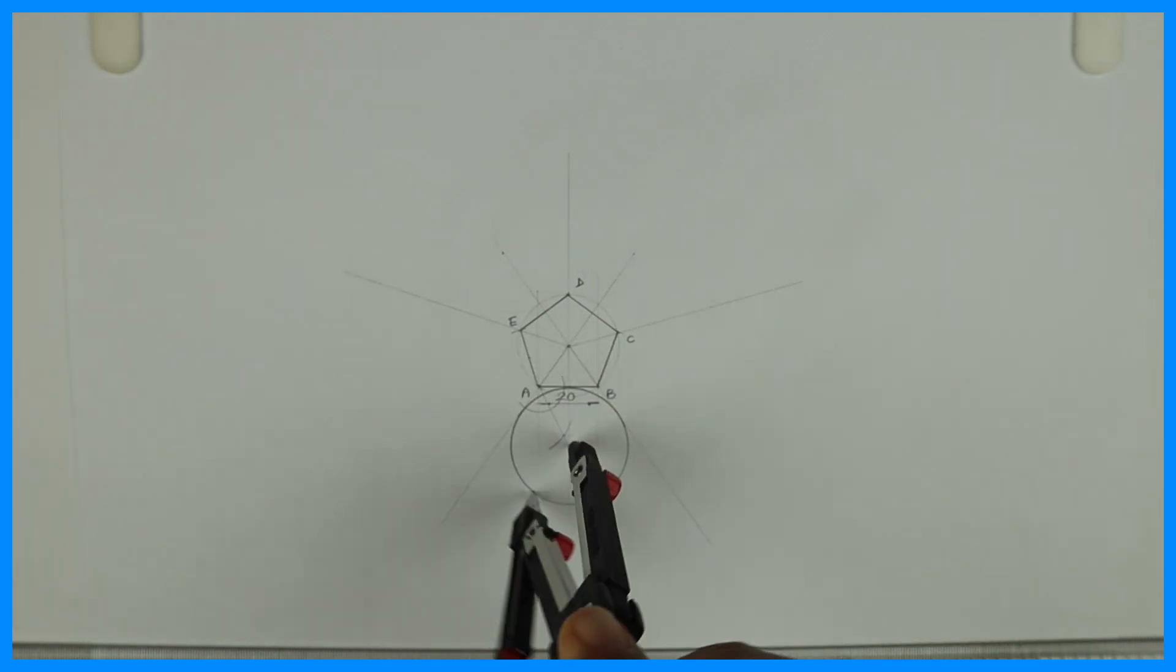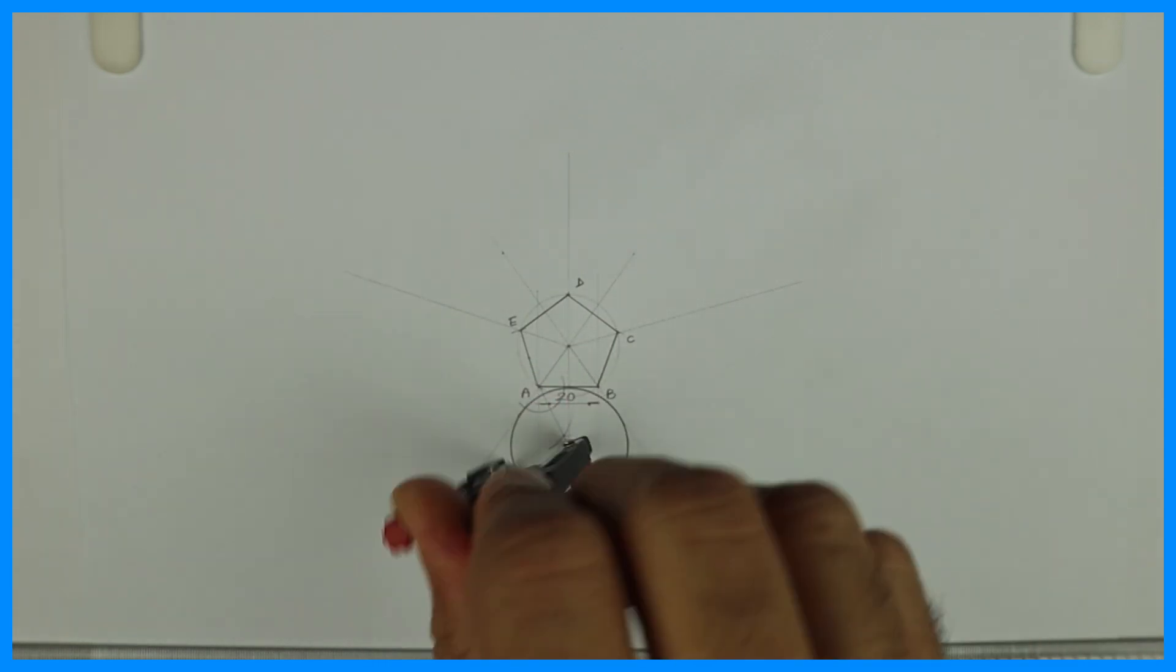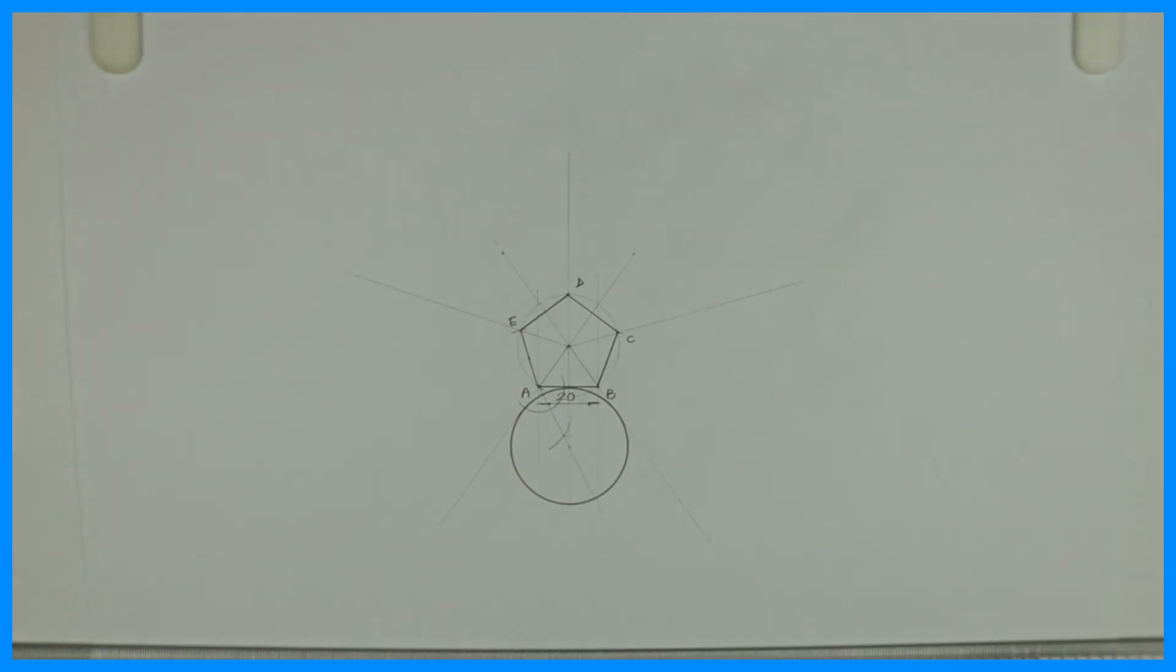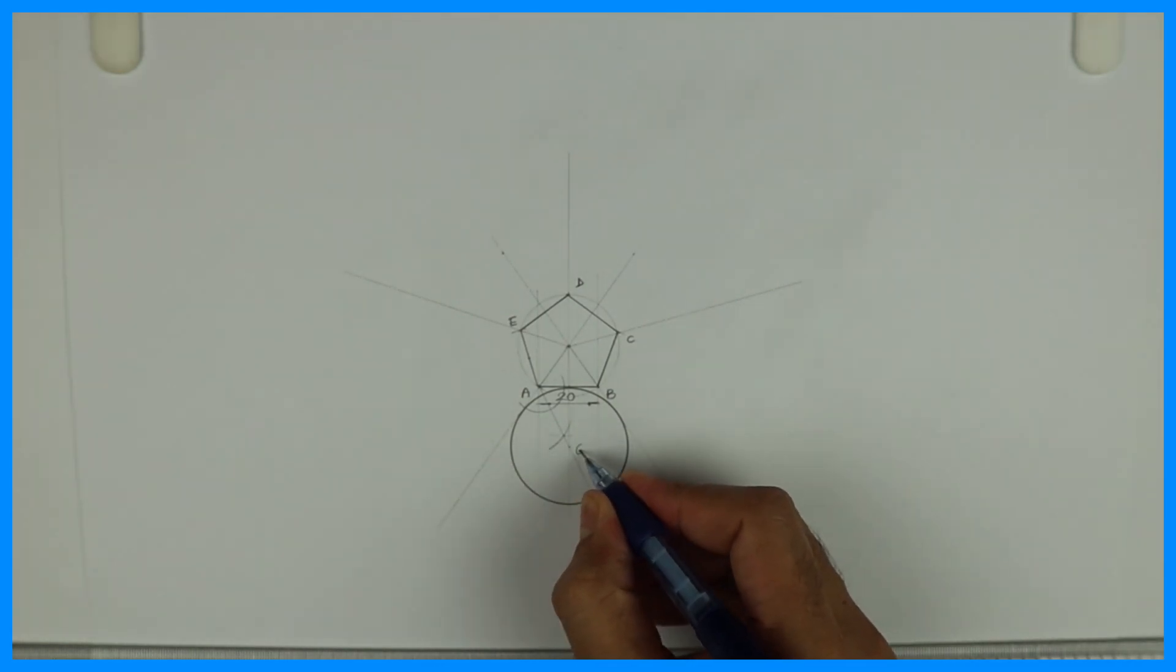So we are done with first circle. Now what we need to do, we need to transfer. We'll do naming, this is G.